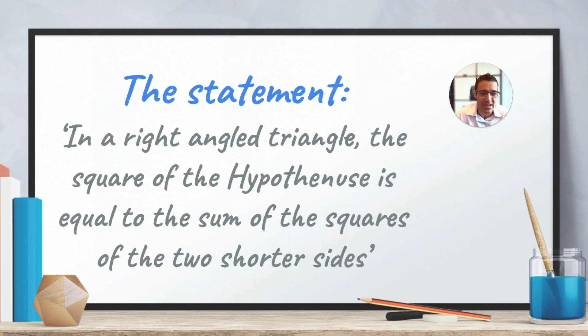So for the statement itself, and this could help you remember it, in a right-angle triangle, the square of the hypotenuse is equal to the sum of the squares of the two shorter sides. So if you take the long side and you square it, it should be equal to the sum of the squares of the two shorter sides. Now, remember, the premise is that it's in a right-angle triangle. So this only works if the triangle is right-angled.